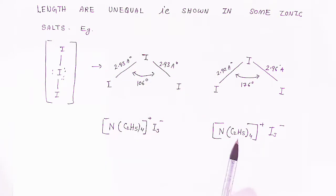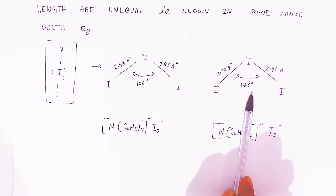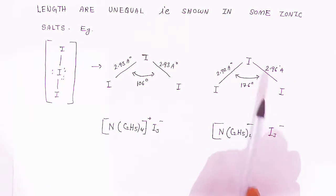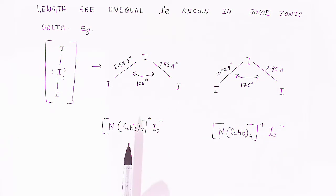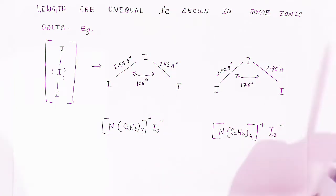And in another ionic salt, the iodine-iodine bond angle is 176°. This way we can explain the structures and shape of the trihalide anions.